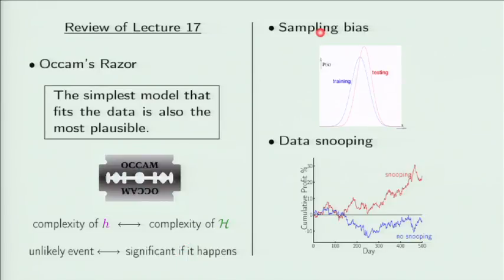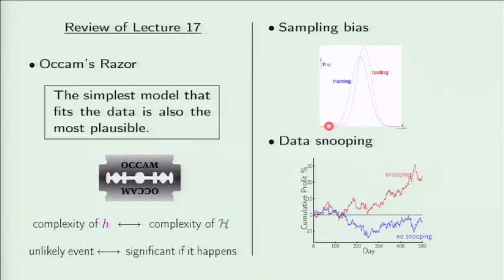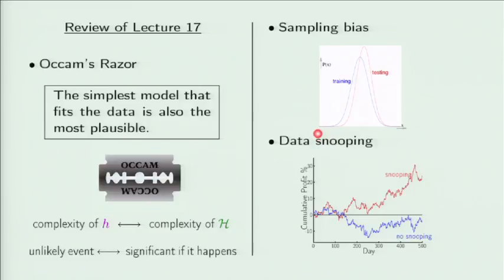The second principle had to do with sampling bias, which reminds us that the training data comes from the same distribution as the test data — that was the basic assumption in all our theoretical analysis. When it doesn't, there is a bias, and since your learning algorithm learns only from the training data, it will inherit whatever distribution is in the training data, and therefore the result will be accordingly biased. If the mismatch is nice and continuous, there is a way to compensate by making the sample look as if it came from the other distribution. But if the training data doesn't represent a particular part of the space at all, then there is nothing that can be done, and you get something inherently biased.